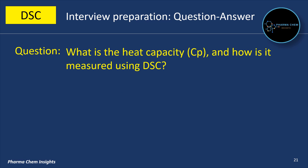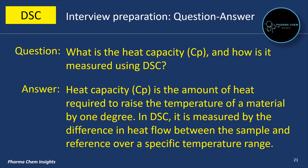Next question: What is heat capacity and how is it measured using DSC? Heat capacity is the amount of heat required to raise the temperature of a material by 1 degree. In DSC, it is measured by the difference in heat flow between the sample and reference over a specific temperature range.